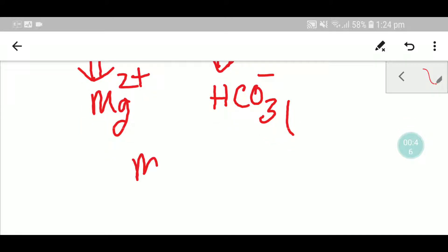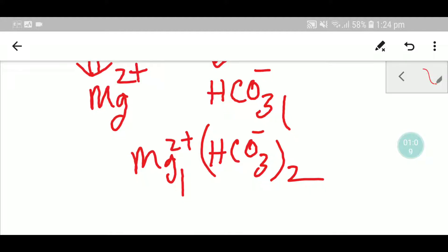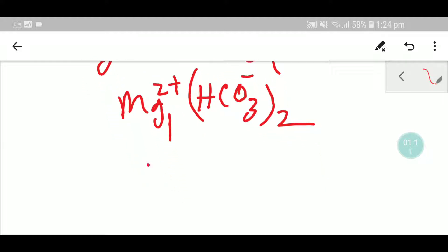Now you have to write the two ions side by side so that you can write the formula of magnesium bicarbonate. You have to use the criss-cross method. That is, the superscript of magnesium will be the subscript of bicarbonate, and the superscript of bicarbonate will be the subscript of magnesium. So you are getting the formula like this.